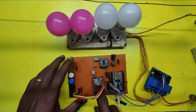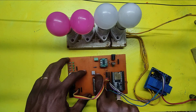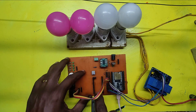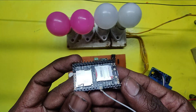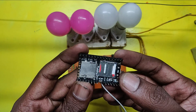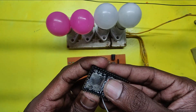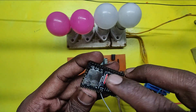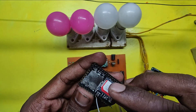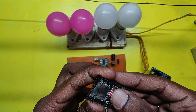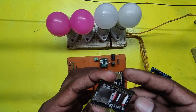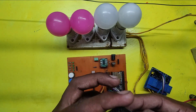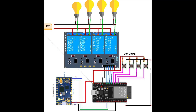Here I used the AI Thinker A9 GSM development module. This module will not support 4G SIM cards. In India, it will support Airtel, VI, and BSNL SIM cards, but it will not support Jio SIM cards. This is the circuit diagram for our project.